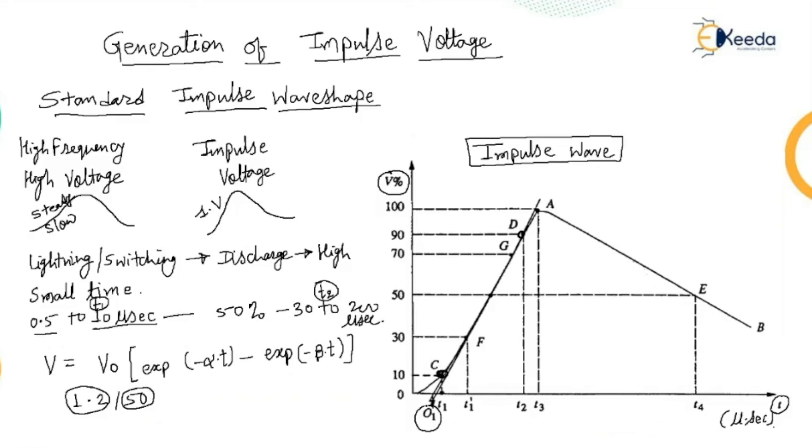So, 1.25 times the interval between times T1 and T2 corresponding to points C and D, that defines as the front time, that is 1.25. The point E is located on the wave tail corresponding to 50%. Corresponding to 50%. So you can see the voltage of 50% is reached. So, this particular point, that is point E and its projection on the time axis is T4. So, O1 T4 is defined as the fall or tail time.